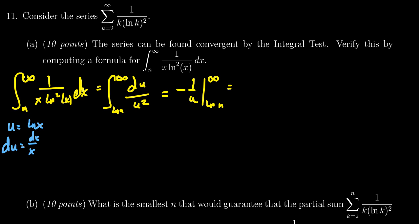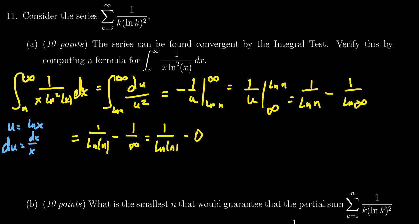And so then plugging that in here, you're going to get 1 over the natural log of n minus 1 over the natural log of infinity, for which the natural log of infinity is itself infinite. So you get 1 over the natural log of n minus 1 over infinity. That last term is then 0. And then simplifying, you end up with 1 over the natural log of n.